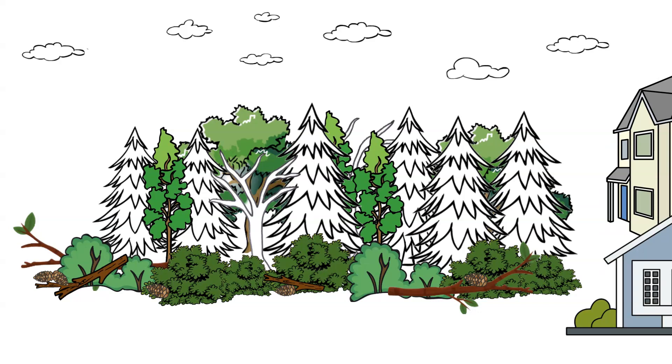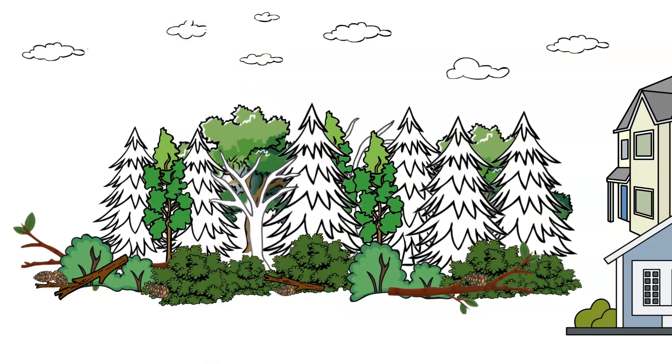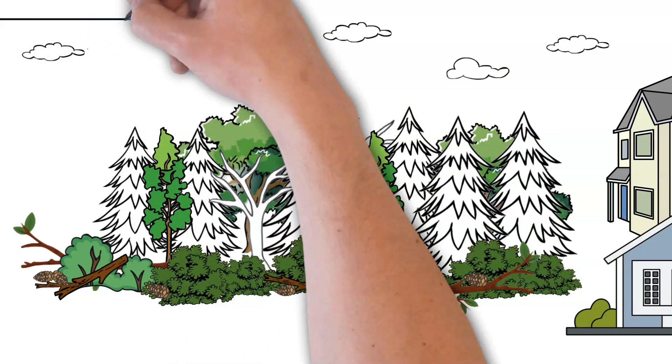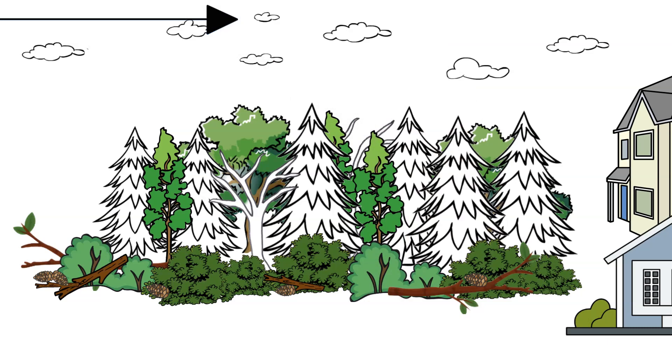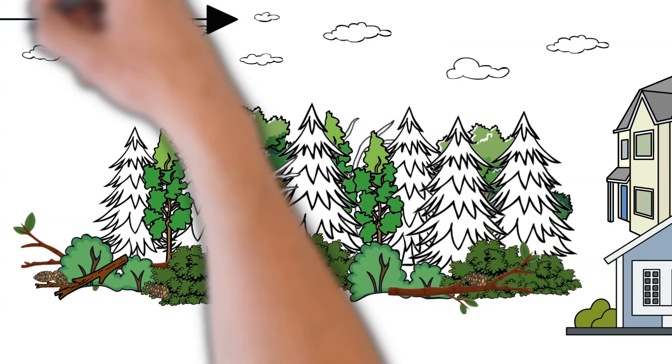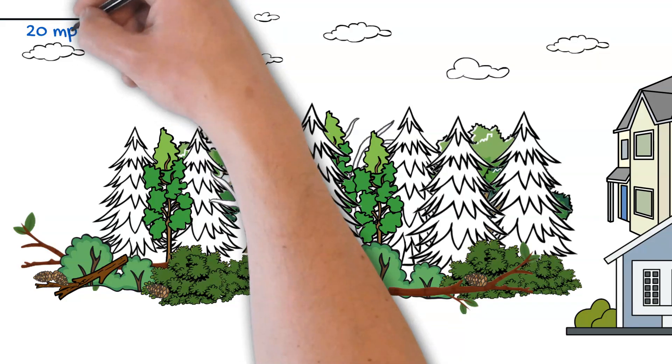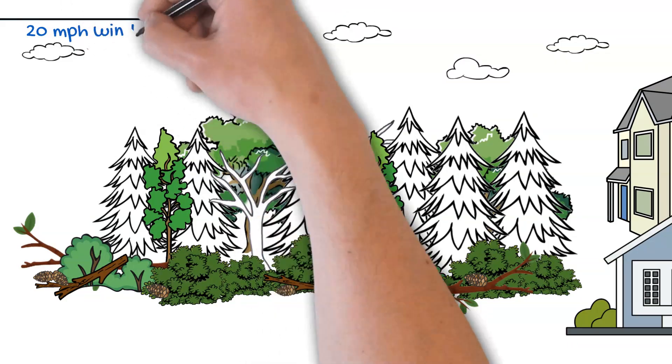So let's talk about wind. And in wildfire behavior we look at the wind as 20 feet above the fuel. In this case it's 20 feet above the canopy of these trees. For the sake of this discussion let's say that this wind is 20 miles an hour at 20 feet above the canopy.